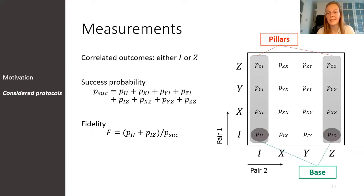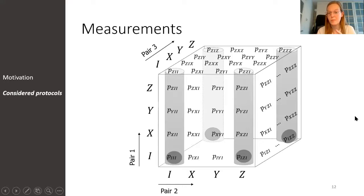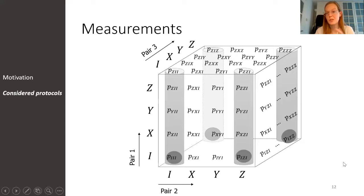The elements in grey play a very important role for us, so we give them a name. For reasons you can maybe imagine by looking at this picture, we call the grey columns the pillars and the elements in the lower corners the base. This geometric picture easily generalizes to larger input states. For instance, if we start with three states, we can put the probabilities in a cube, where the pillars are four columns and the base is four elements in the lower corners. For larger values of n, we get some sort of hypercube, which I cannot draw, but hopefully you got the idea.